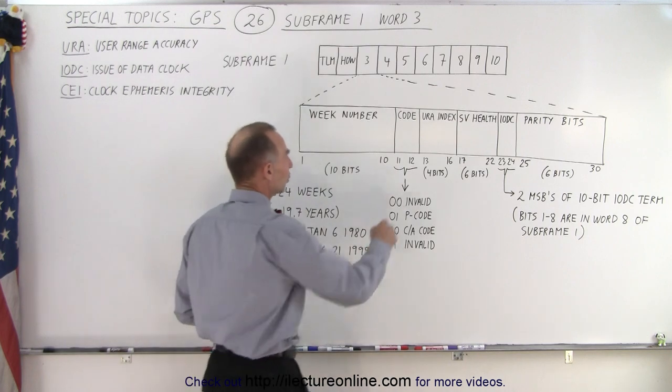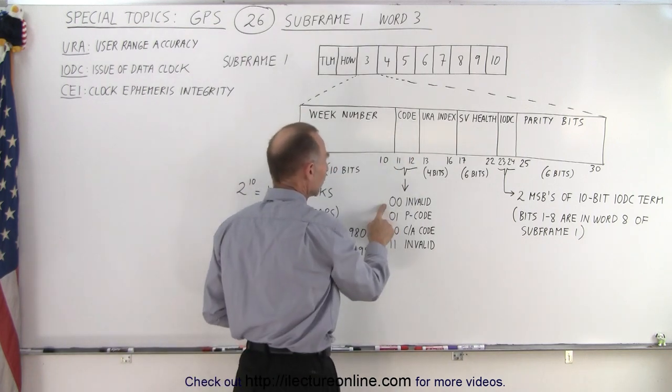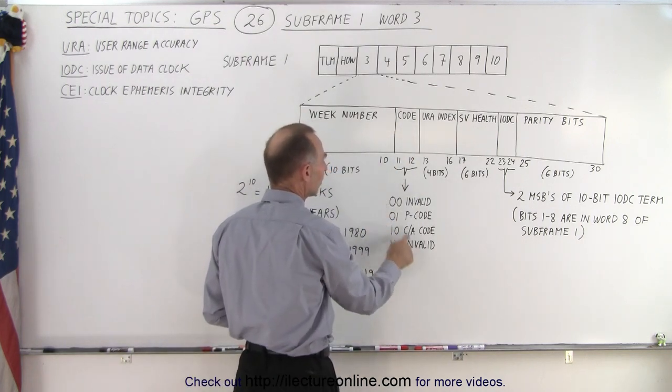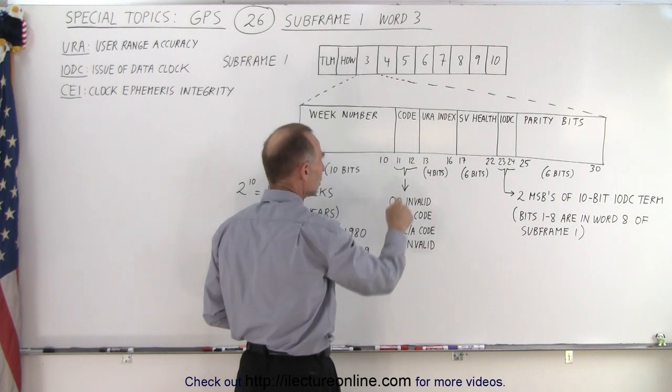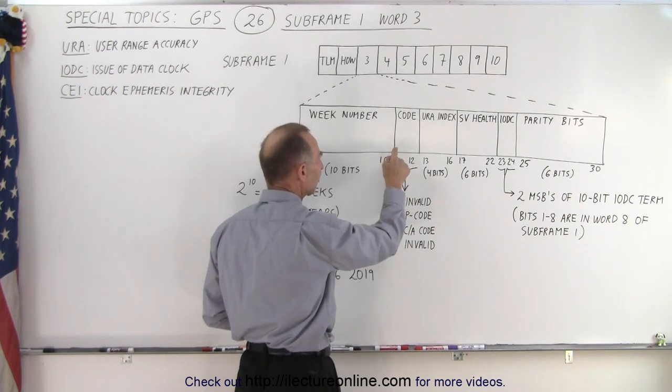The next two bits are code bits. 00 and 11 are invalid. 01 means we have P code. 10 means we have CA code.